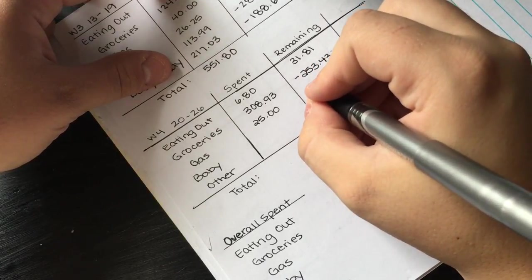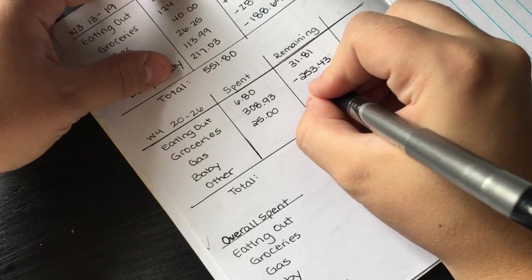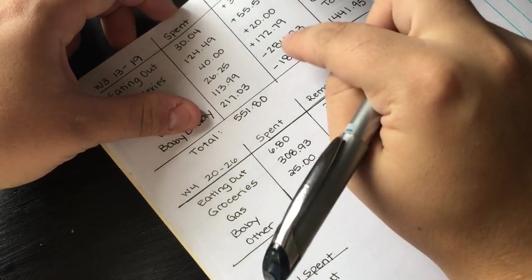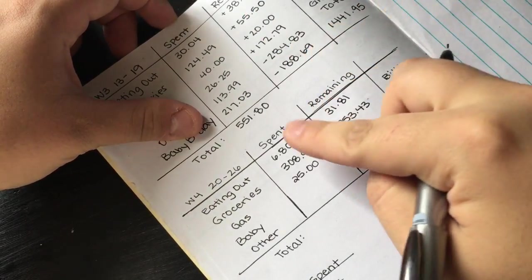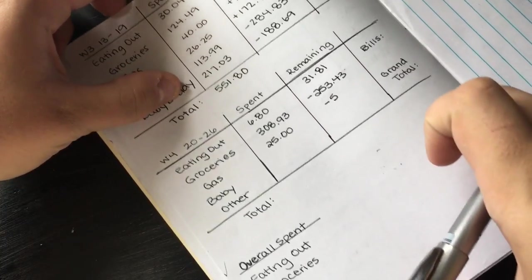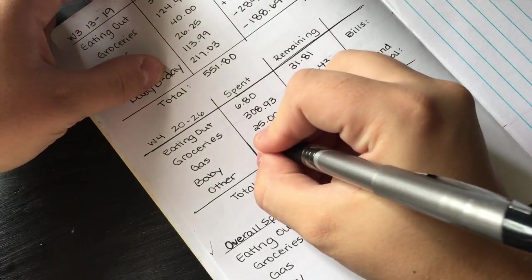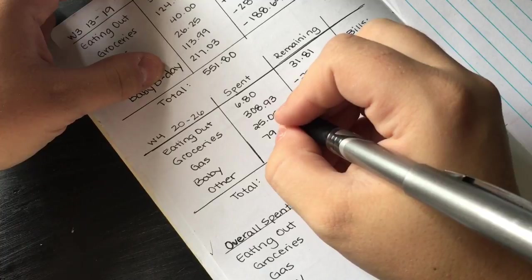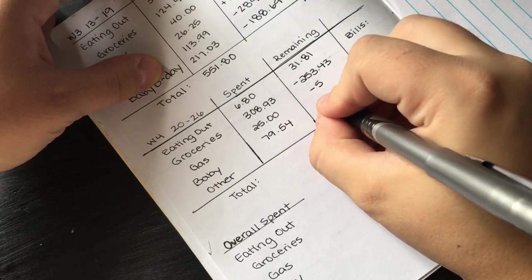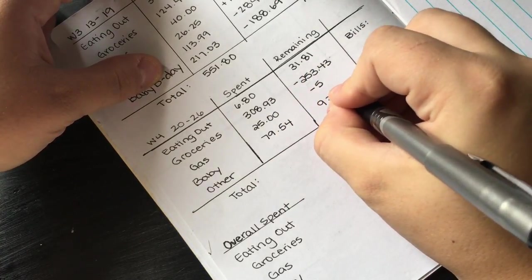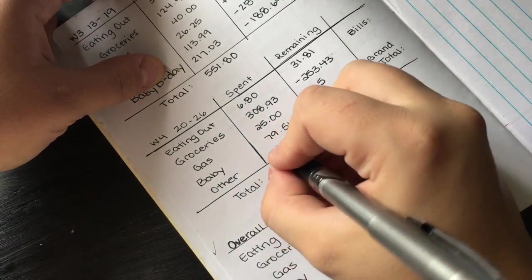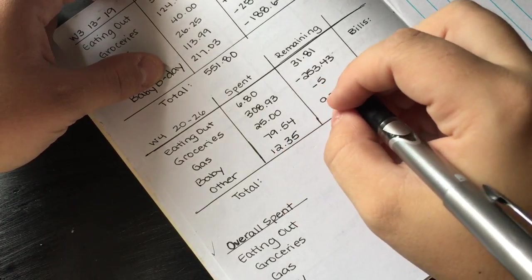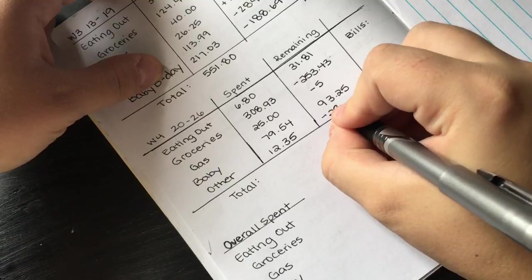Gas we were negative $5 because we had $20 left over. I'm getting these numbers by taking the remaining, subtracting the spent, and that's the new remaining. For baby we spent $79.54, which means we still have $93.25. And other we spent $12.35, which means we are negative $297.18.